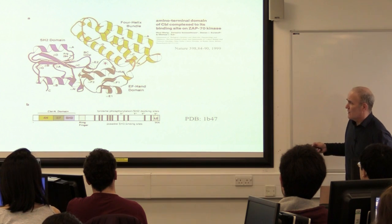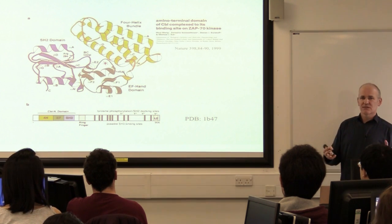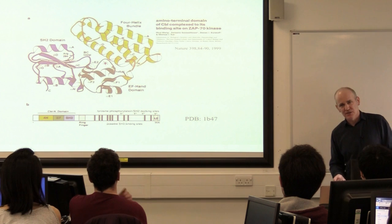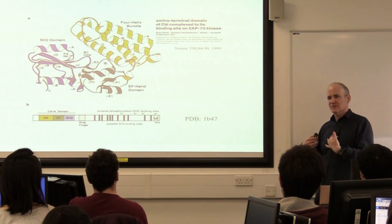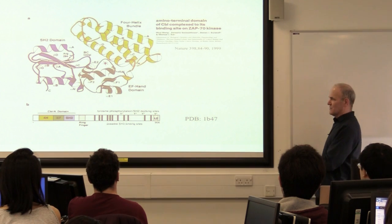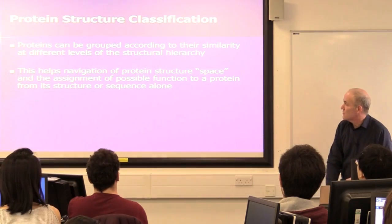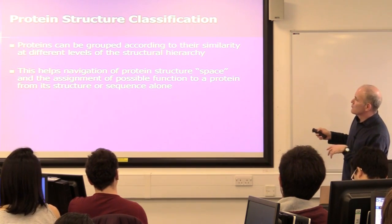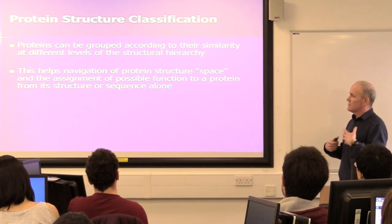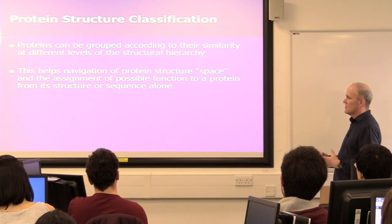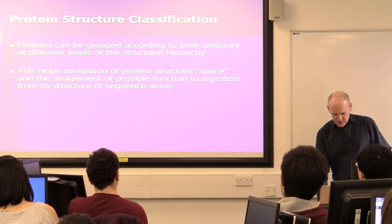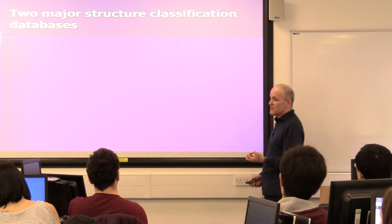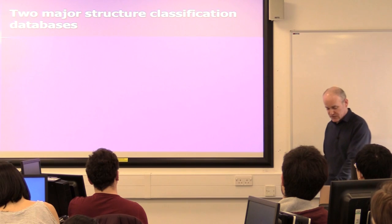The best place to start, if you know something about structure, is to look at resources that classify protein three-dimensional structures as domains. There are two major structural classification databases that have been developed and are freely available on the internet. You can group proteins according to their similarity at different parts of the structural hierarchy, and it helps you work your way around protein structures.